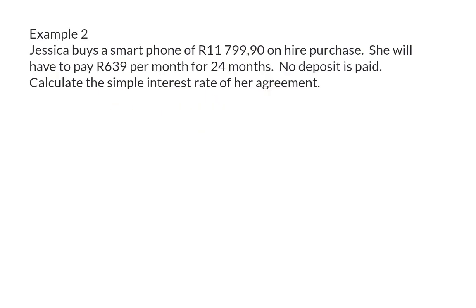Example 2: Jessica buys a smartphone of R11,799.90 on hire purchase. She will have to pay R639 per month for 24 months. No deposit is paid. Calculate the simple interest rate of her agreement. The calculations are in the opposite order of the previous example because here we already know that her monthly payment will be R639 and she will pay that 24 times. This means we know that she will pay R15,336 for this smartphone instead of the original R11,799.90.